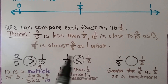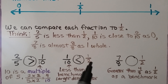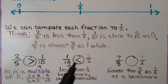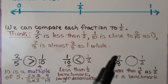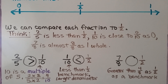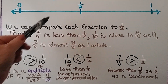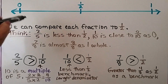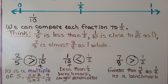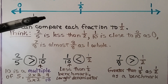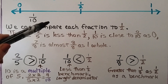Both one-tenth and one-half have a one for a numerator — they're both unit fractions — and two-fifths has the lower denominator, so its parts are bigger. So one-tenth is less than one-half as a benchmark. For seven-eighths and one-half: four is half of eight, so four-eighths would be half, and seven-eighths is greater than that, so it's greater than half. We know two-fifths is less than half, so it goes on the left side, and it's greater than one-tenth.